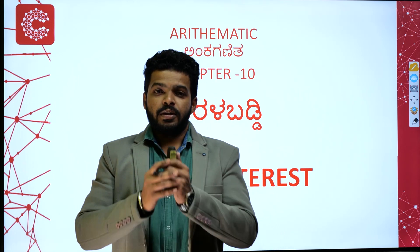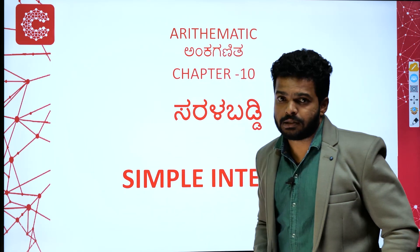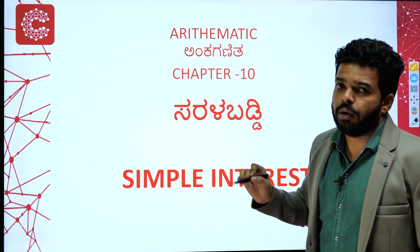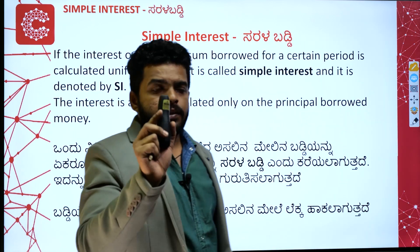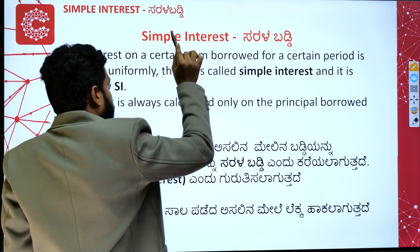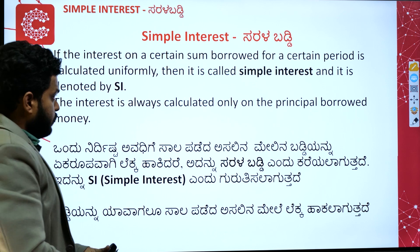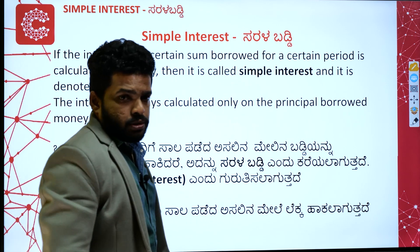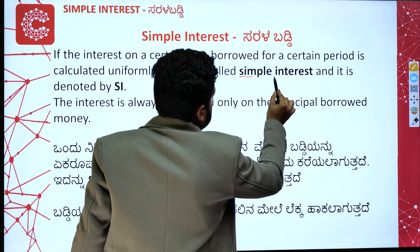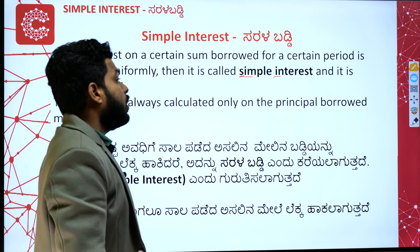Hi students, welcome back to Connect School. Today we are going to learn the topic of simple interest — sarala baddi. The definition: if the interest on a certain sum borrowed for a certain period is calculated uniformly, then it is called simple interest, and it is denoted by SI. The interest is always calculated only on the principal borrowed amount.